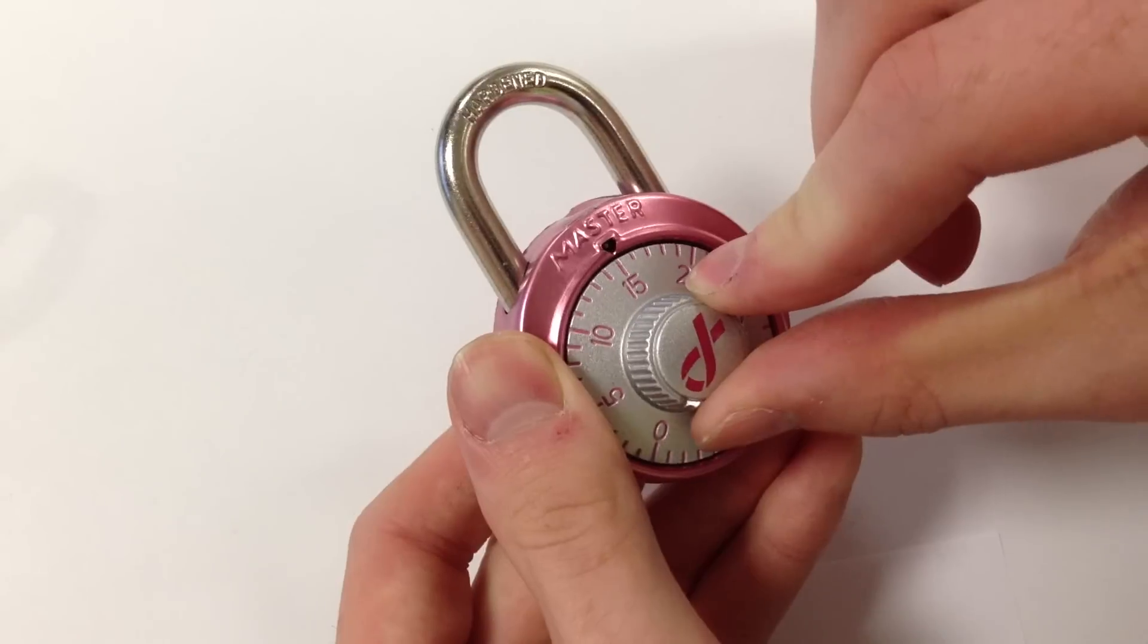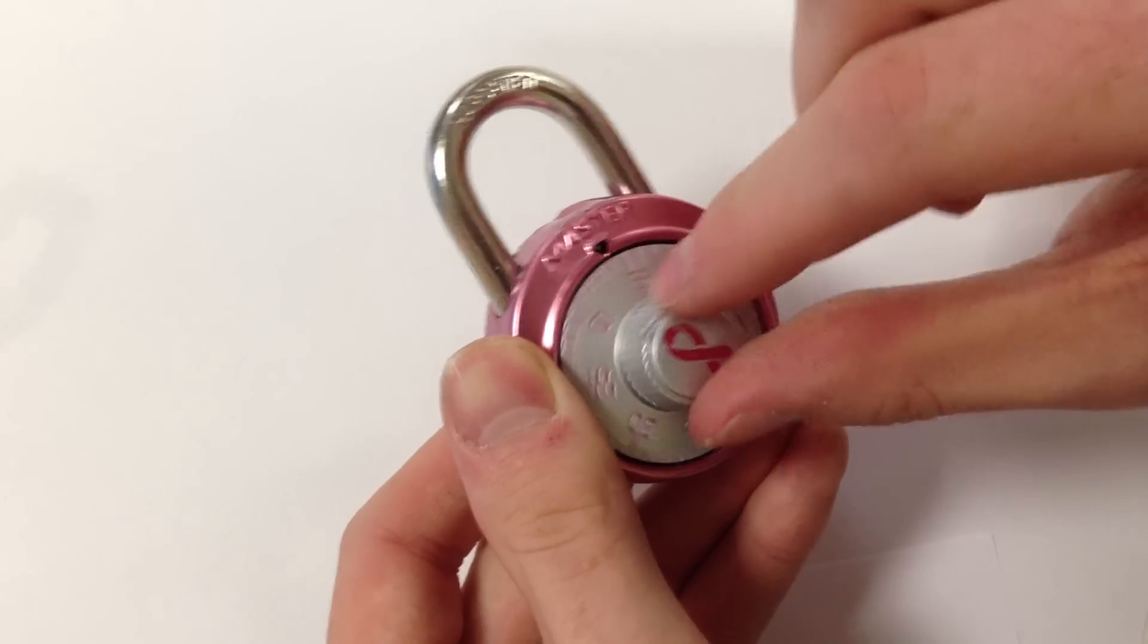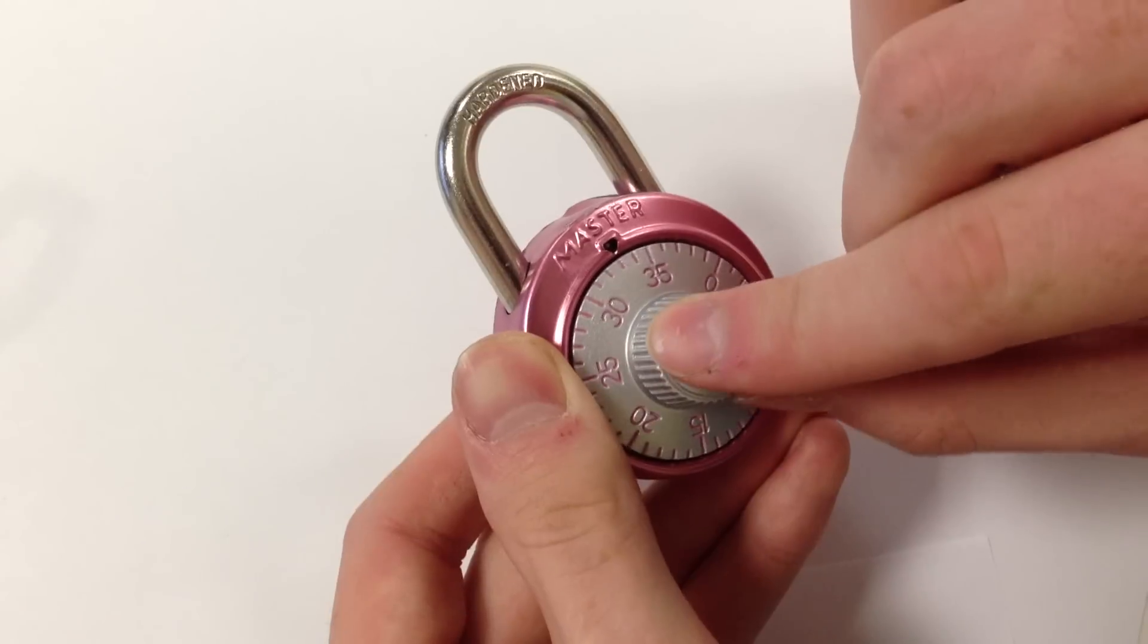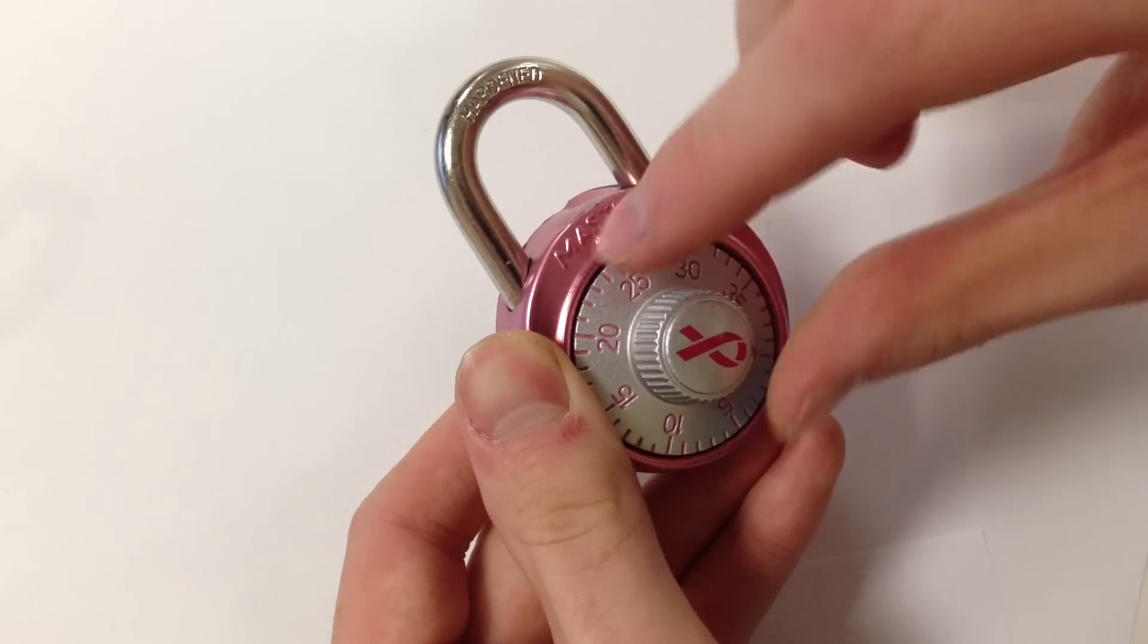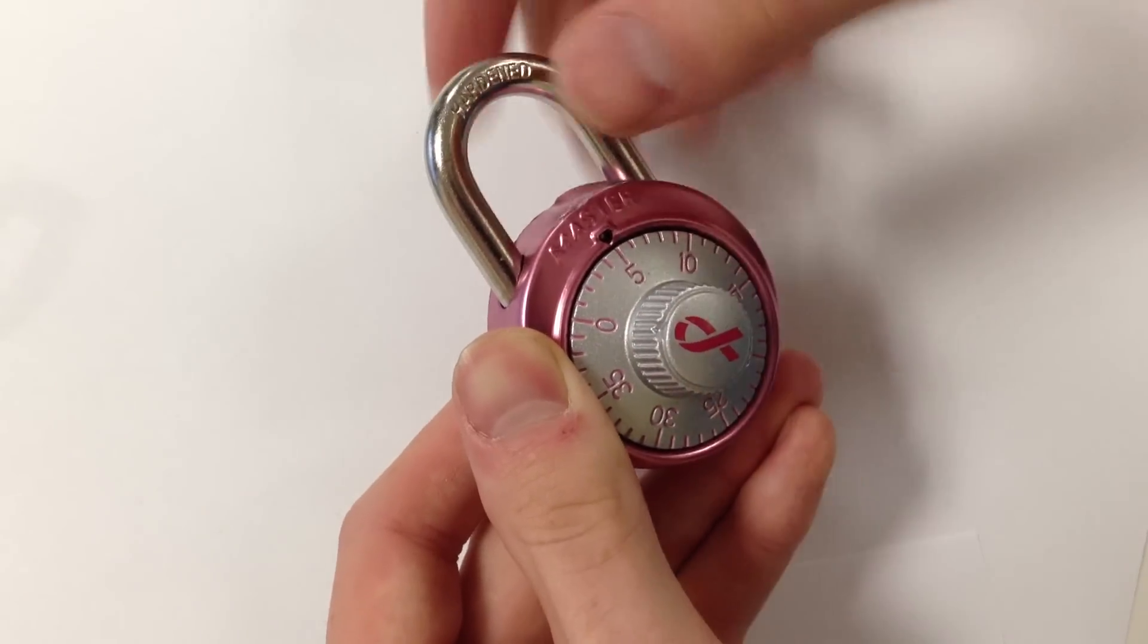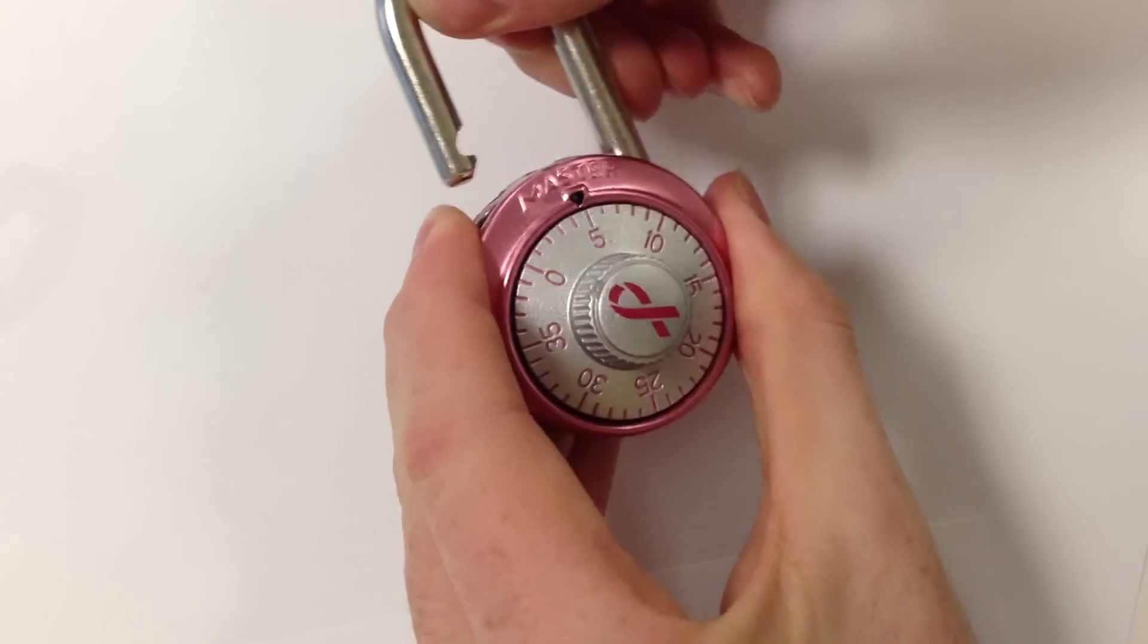We have 15, skip 36 once, 36, and 5. This frees the shackle.